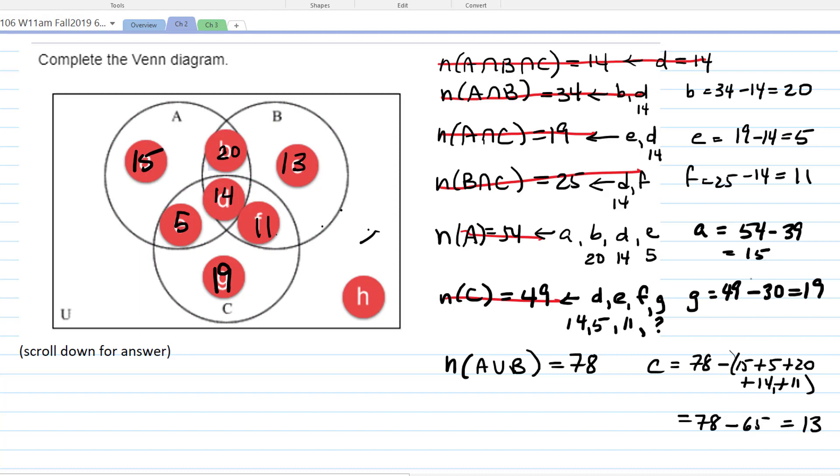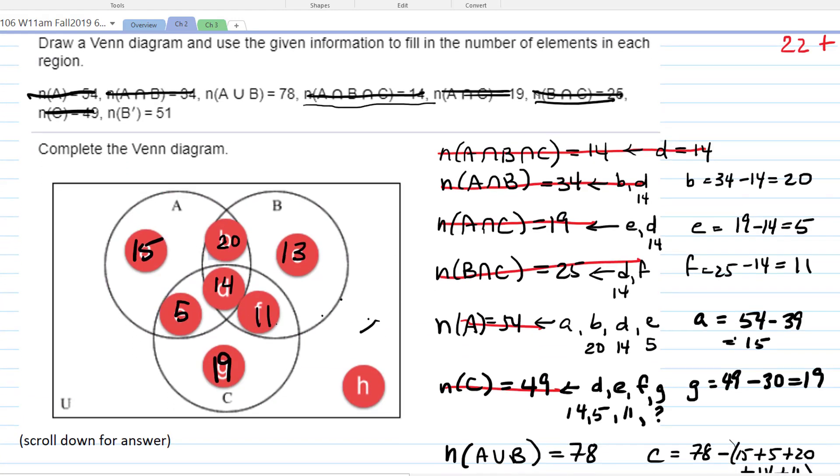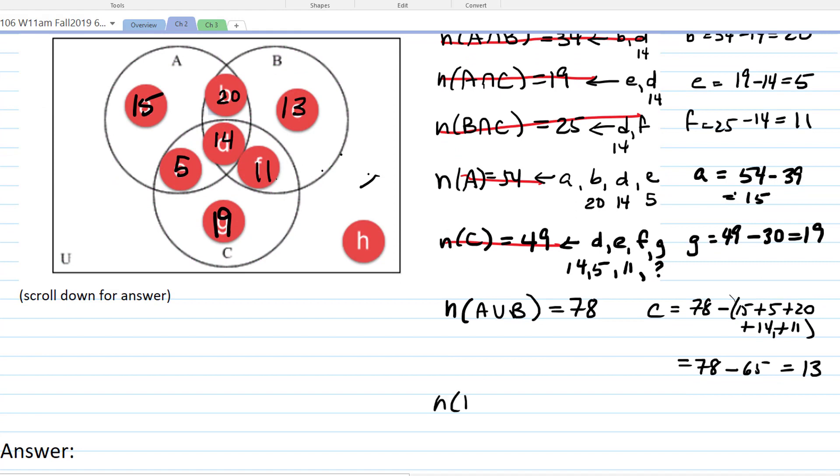And then lastly, the only fact left that we haven't used is the number that are not in B is 51. The number that are not in B is 51. So what's not in B is all of these guys, right? So that would mean that H is 51 minus, and we have to take away the 15 and the 5 and the 19, so 39. So 51 minus 39 is 12.